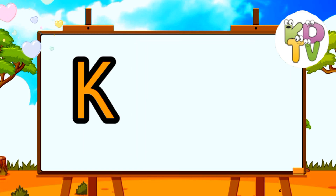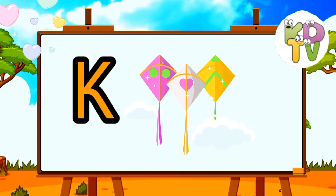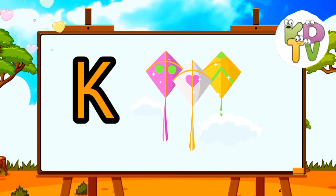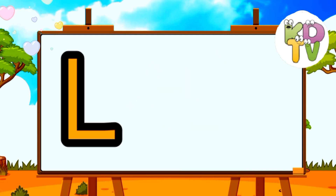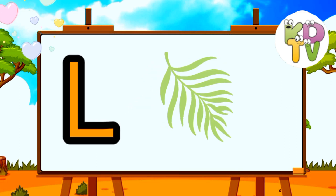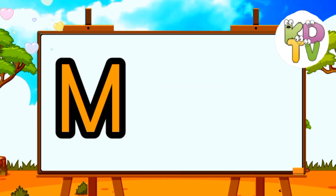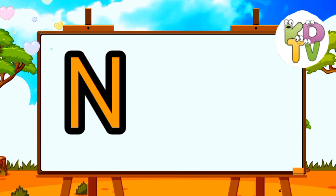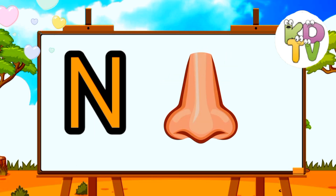K is for Kite. L is for Leaf. M is for Mushroom. N is for Nose.